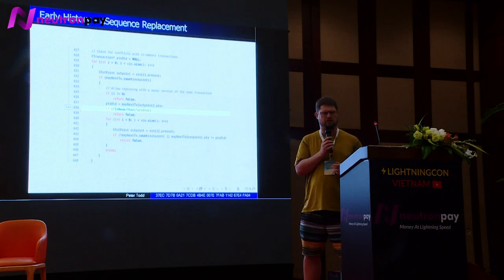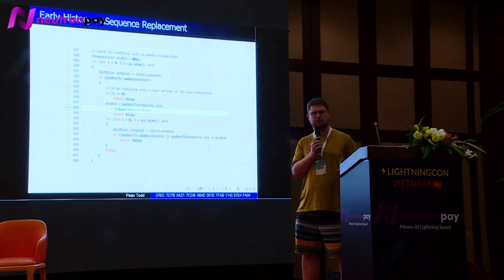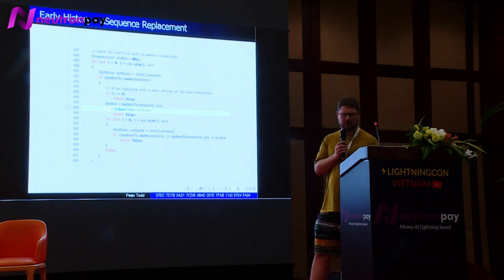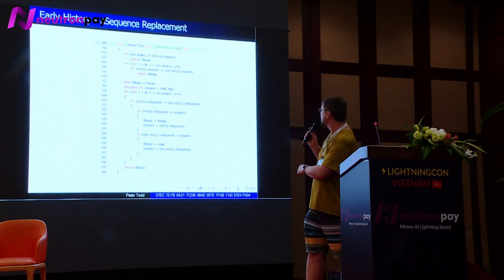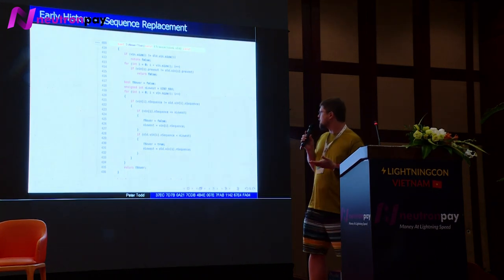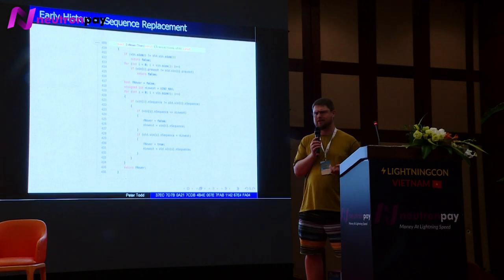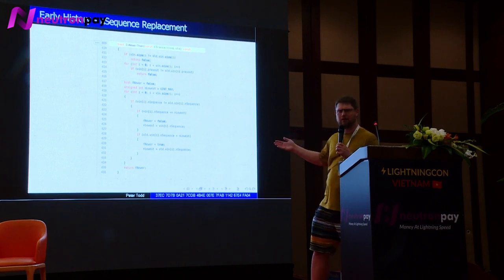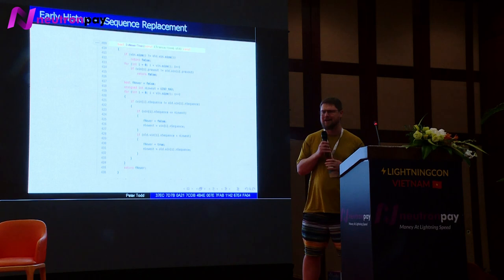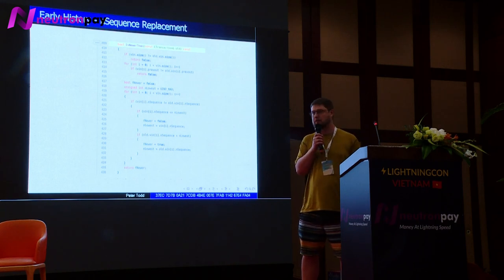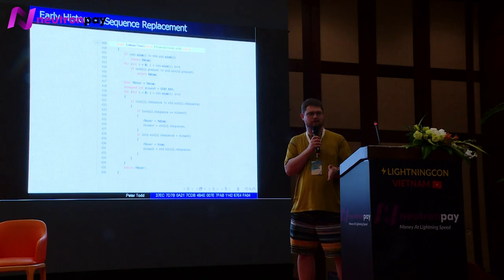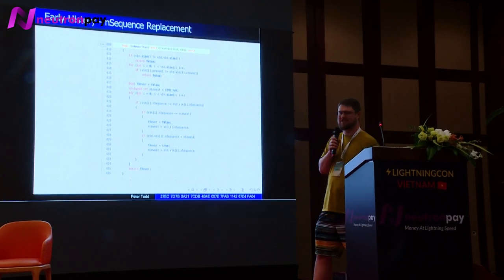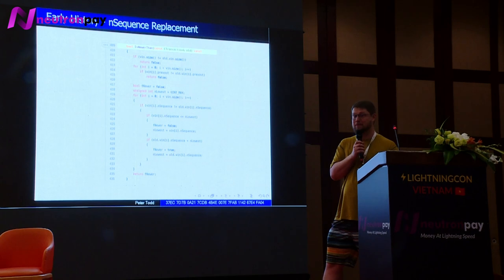It seems like a simple idea, but there's a problem. nSequence is 32 bits — that's about 4 billion. With that original code, there's nothing saying maybe we should put a rate limiter on it. About 150–200 bytes times 4 billion is enough data to overwhelm the network with replacements. It would make sense in a rate-limited centralized system, but not in Bitcoin. So this in-sequence stuff got removed pretty quickly and replaced by a much better scheme called replace-by-fee.